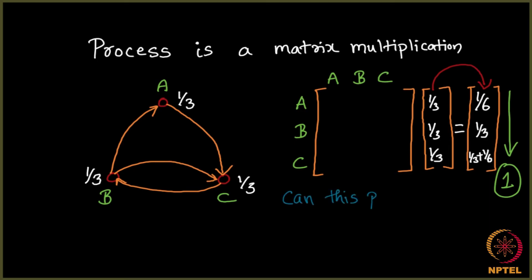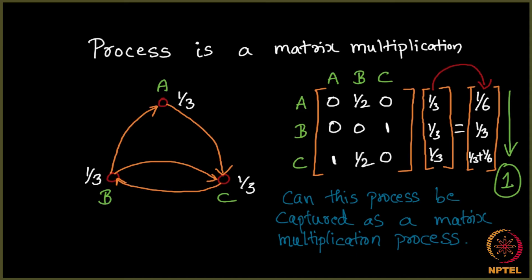So can this process be captured as a matrix multiplication process? That is my question. Yes, it can be is what you will observe very soon. That is because this is the matrix which will give rise to this vector when you multiply this vector and this is my matrix. You can verify it.